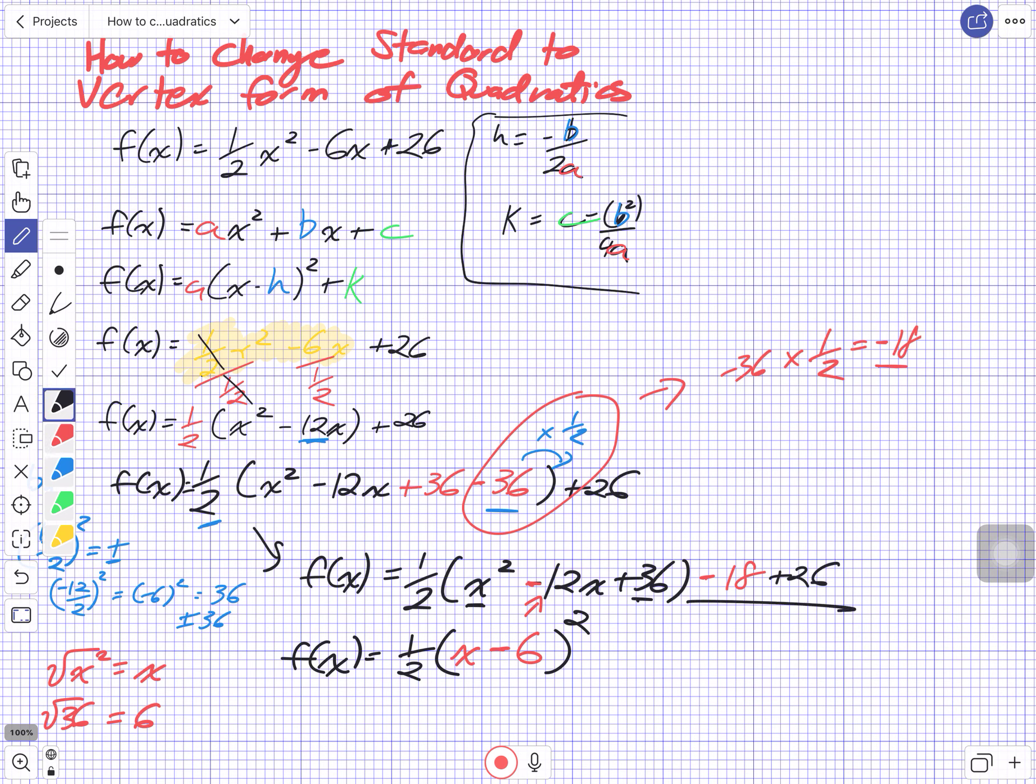And then finally, we've got to combine those two. That's going to be 8. So we get positive 8. So the vertex form is f(x) equals 1/2(x - 6)² + 8.